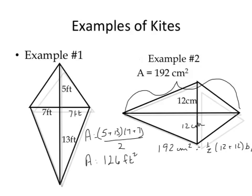So if we know that 192 centimeters squared equals one half times 12 plus 12 times base 2, then we can figure out what the length of base 2 is. So 192 will equal one half times 24 which is 12. So base 2 will equal 96 centimeters.